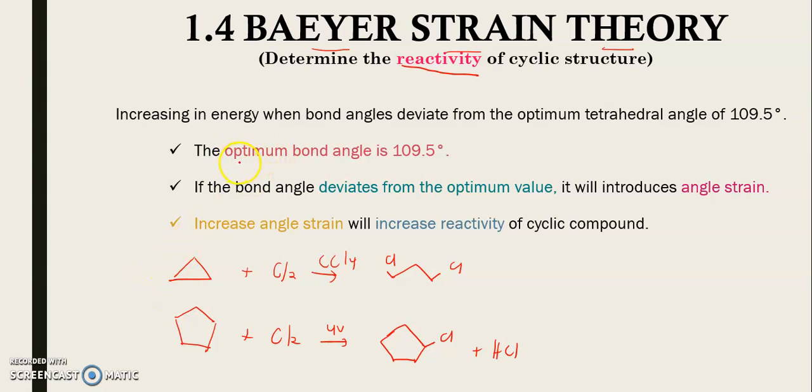We are going to use the Bayer strain theory to assess the reactivity of cyclic compounds. According to the Bayer strain theory, the optimum bond angle for cyclic compounds is 109.5 degrees. Optimum means most stable or ideal bond angle. Bond angle is the angle within the bonding in the cyclic structure.